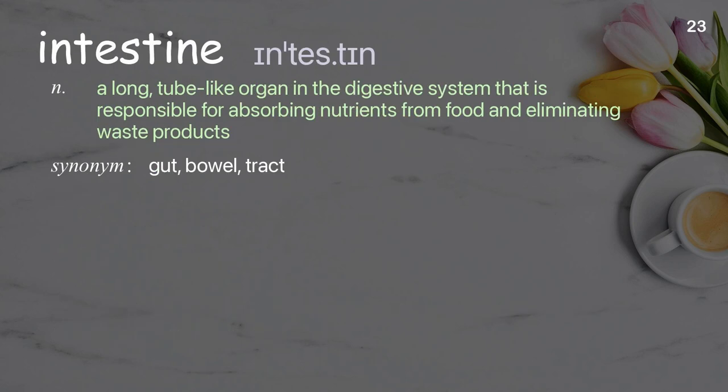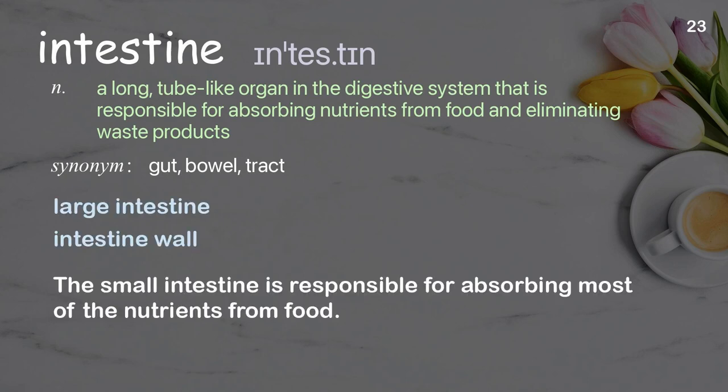Intestine. A long, tube-like organ in the digestive system that is responsible for absorbing nutrients from food and eliminating waste products. Examples: large intestine, intestine wall. The small intestine is responsible for absorbing most of the nutrients from food.